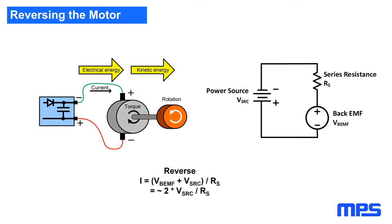Abruptly reversing the motor is an even worse situation. If you suddenly reverse the polarity of the supply, the voltage source and the back EMF are now in series and of the same polarity, so the effective voltage applied to the series resistance is almost twice the source voltage. The current flow will initially be approximately twice the stall current. That's not only a huge stress on the motor driver, but in some cases that much current can actually demagnetize the permanent magnets in the motor. Current limiting, either in the motor driver IC or in a control algorithm, may be needed.